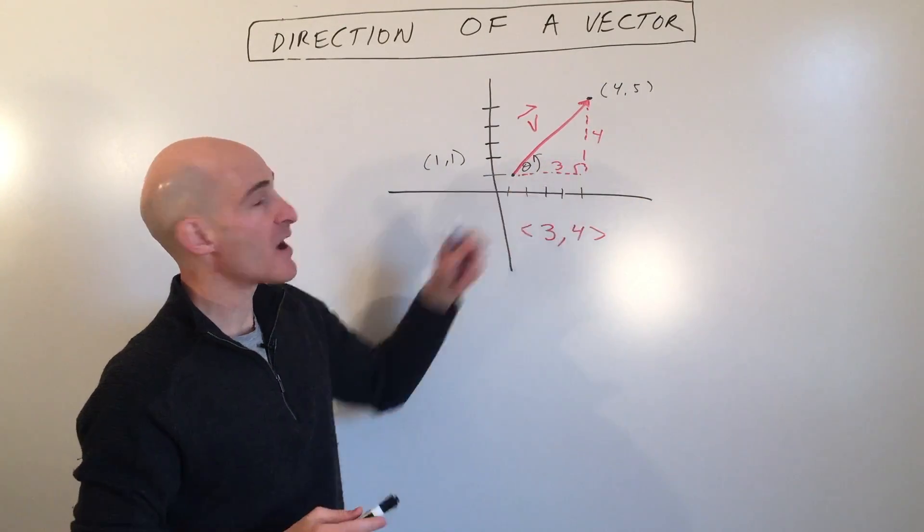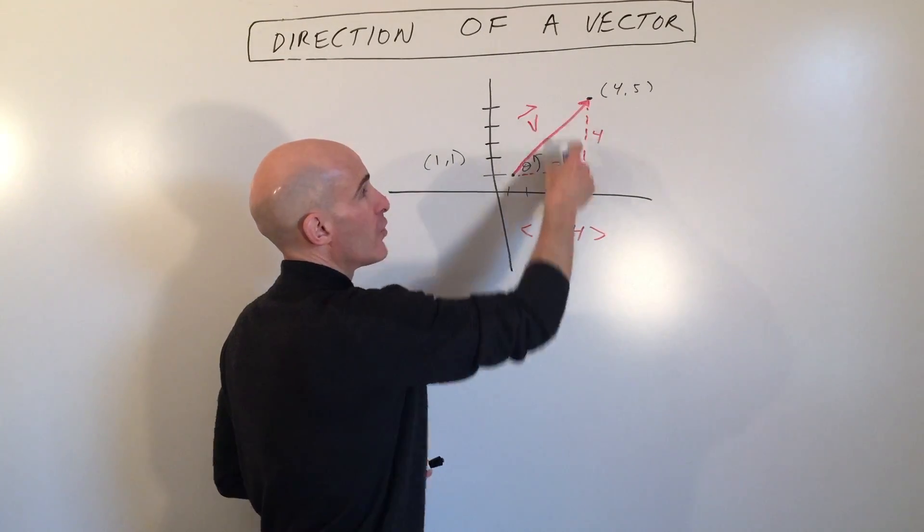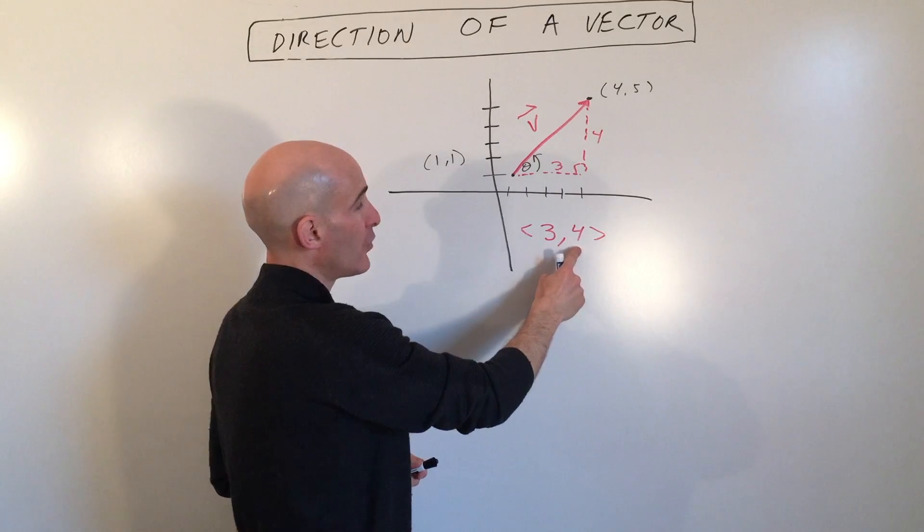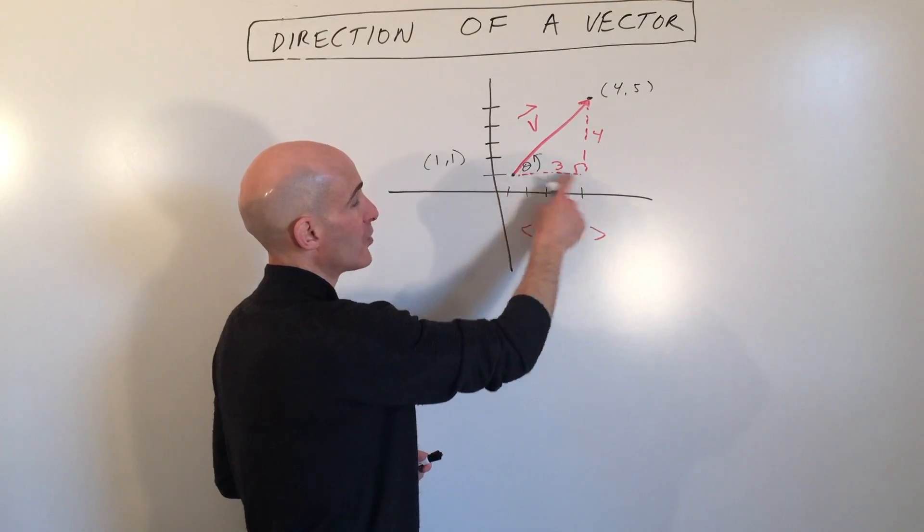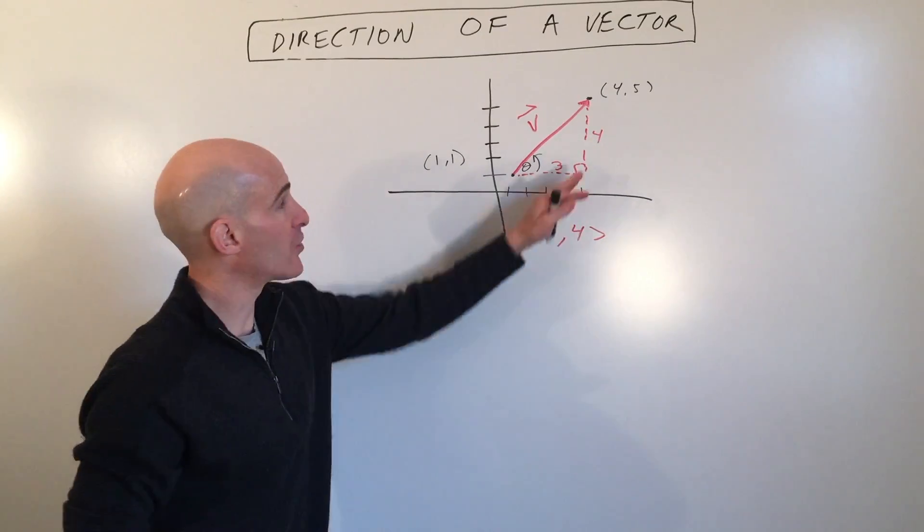You can see we have a right triangle here, and you can see that the vertical component is the y component of the vector, the horizontal component is the x component of the vector. You can see we have a triangle that's formed here, a right triangle.